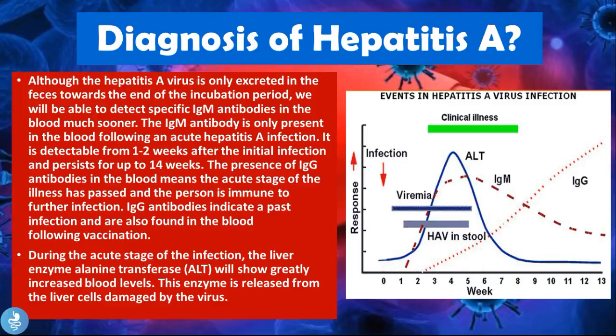Regarding diagnosis: although the Hepatitis A virus is only excreted in the feces towards the end of the incubation period, we can detect specific IgM antibodies in the blood much sooner. The IgM antibody is only present following an acute Hepatitis A infection, detectable from one to two weeks after initial infection and persisting up to 14 weeks. The presence of IgG antibodies means the acute stage has passed and the person is now immune. IgG antibodies also appear following vaccination. During the acute stage, the liver enzyme alanine transferase (ALT) will show greatly increased blood levels, as this enzyme is released from liver cells damaged by the virus.